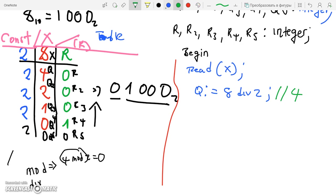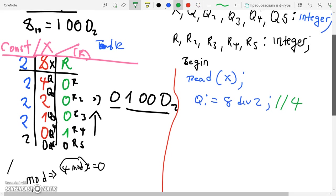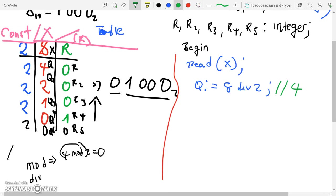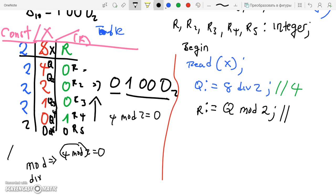After Q you need to write R. And what's R? R is the answer for mod 2, which is Q mod 2. We know 4 mod 2 equals 0. This is the R we're talking about right here, and this equals 0.